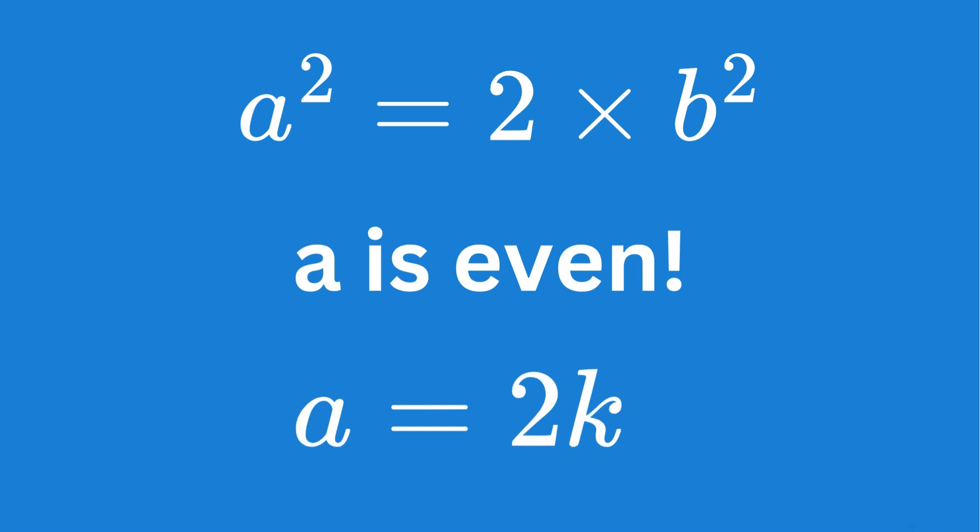Since a is even, we can represent it by 2k, where k is some other whole number.